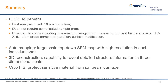Now let's summarize today's talk. FIB-SEM can resolve structures down to sub-10 nanometers without a complicated sample preparation step and fits most solid materials characterization. It has broad applications including cross-section imaging, hotspot detection, TEM sample preparation, and surface modification. CryoFIB can protect sensitive materials from ion beam damage. Auto slice and view with 3D reconstruction reveals detailed structural information in three dimensions. Auto mapping provides a large-scale top-down SEM map with high resolution at each spot. We are now accepting sample submissions for auto mapping, 3D reconstruction, and cryoFIB.